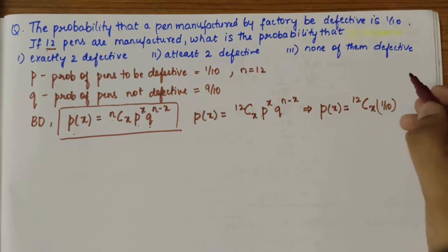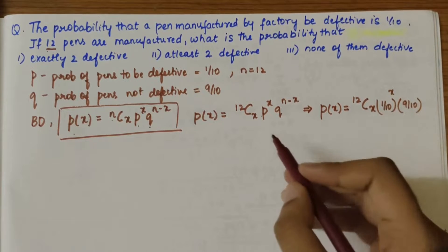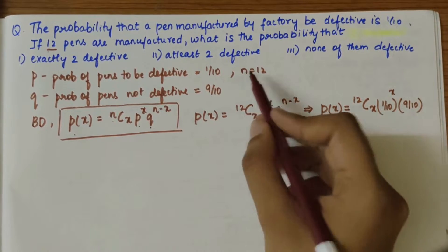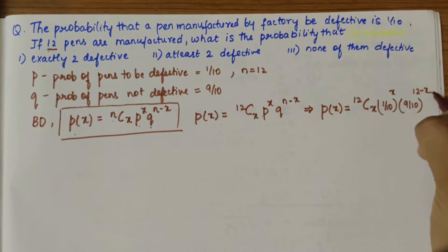So 1/10 to the power of X, and here 9/10 to the power of n minus X. N is 12, so 12 minus X.